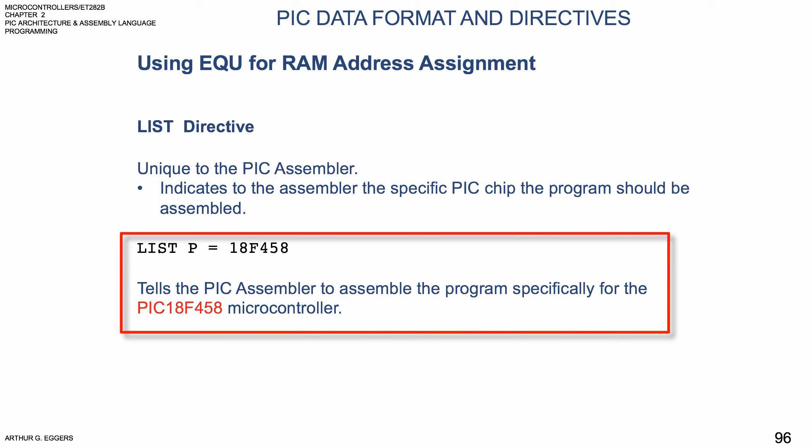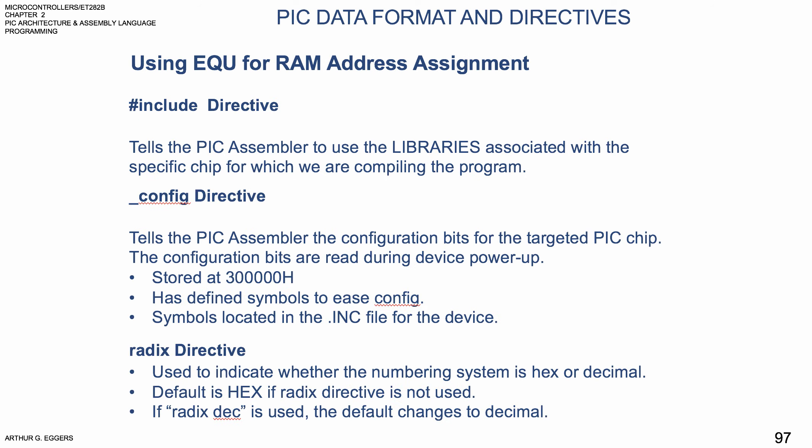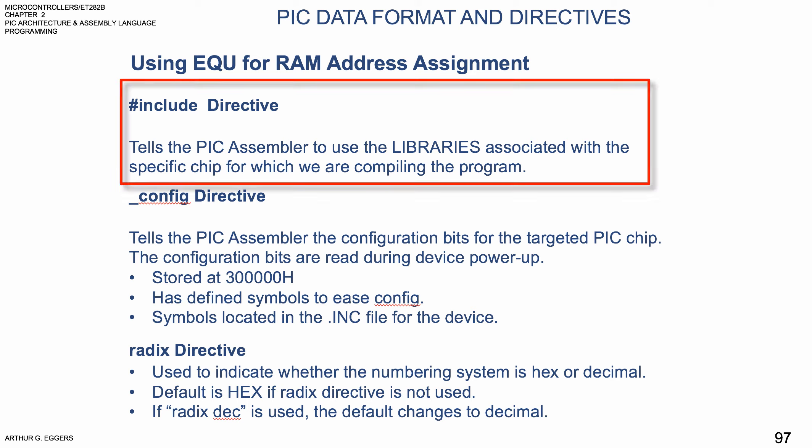Once we get into loading this using the PIC kit 2 and the MPLAB IDE, this will make more sense. The pound sign include directive tells the PIC assembler to use the libraries associated with the PIC chip for which we're compiling the program. There are lots of libraries available, so it saves you from having to write code — if you can just call a library, it makes the coding a lot easier.